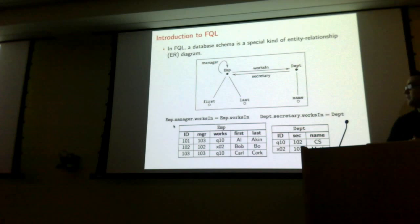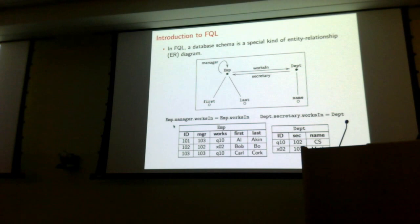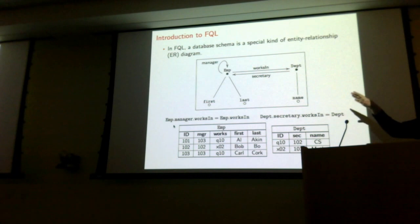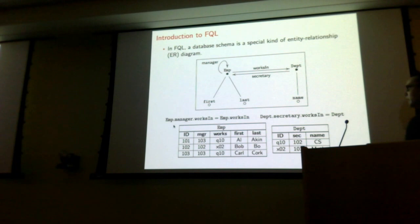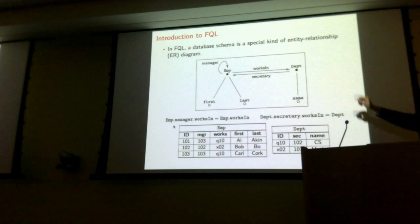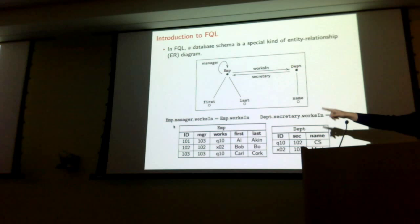Here on the screen I have written essentially an entity-relationship diagram. This is a special kind of relational database schema. You have some entities — in this case, employees and departments — these are little black dots. You have attributes associated with these entities, so an employee has a first and a last name, and the department has a name. Then you have foreign key relationships between employees and departments: an employee can have a manager, an employee works in a department, and the department has a secretary. At the bottom I've written some equations between paths in this schema that say, for example, that an employee's manager must work in the same department that the employee does.